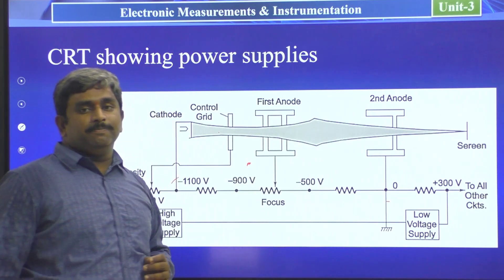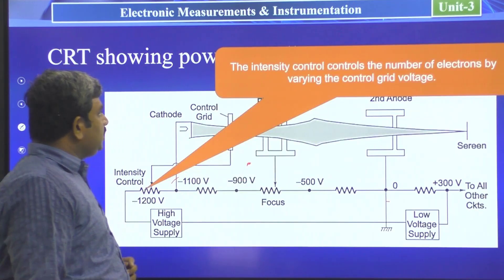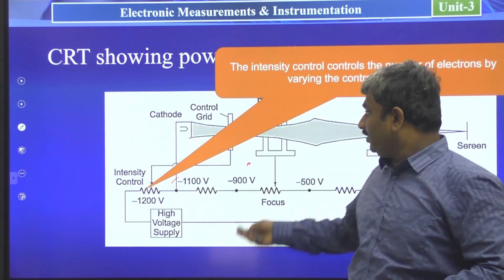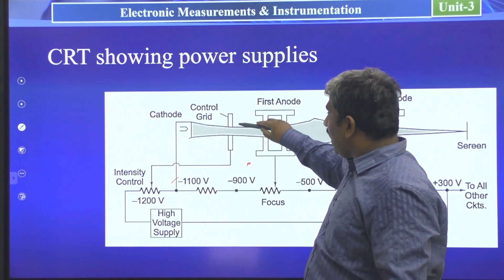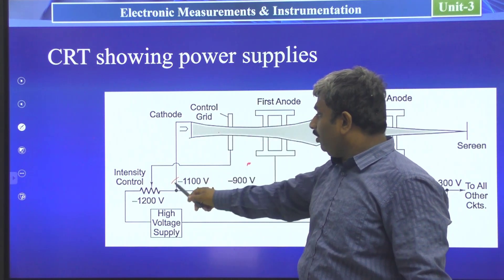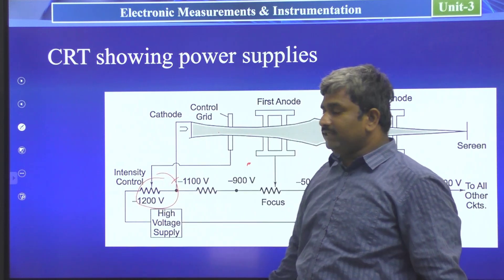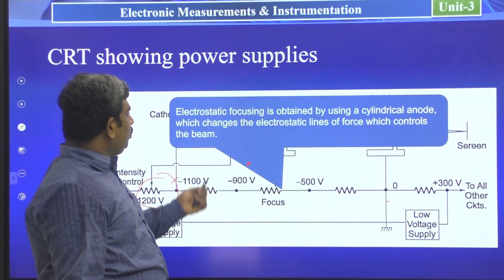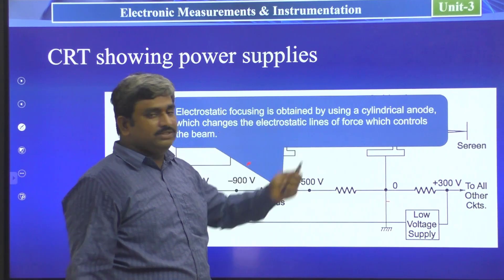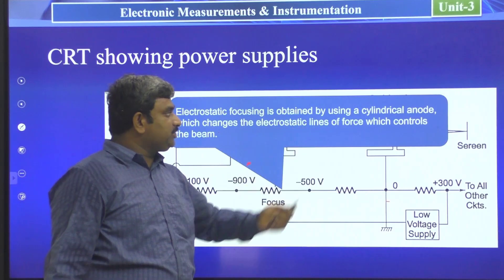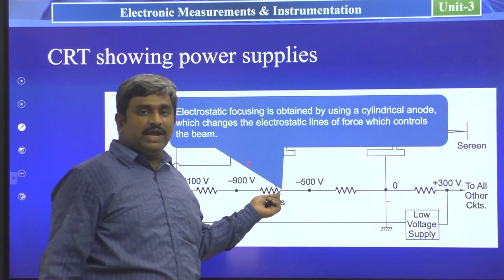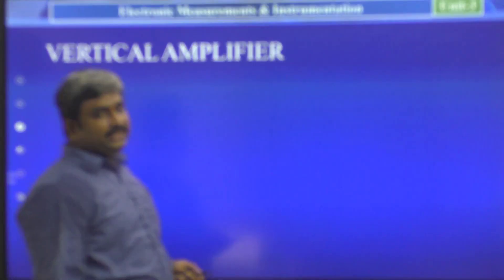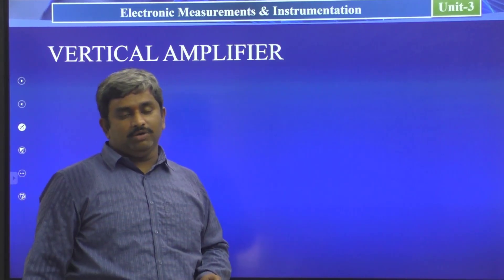In summary: intensity controls the number of electrons by varying the grid voltage; focusing can be done electrostatically or electromagnetically; and electrostatic focusing uses a cylindrical anode structure to change the electrostatic lines of force and control the beam. In the next class, we will see the vertical amplifier concept. Thank you.